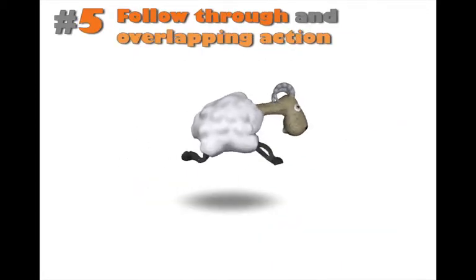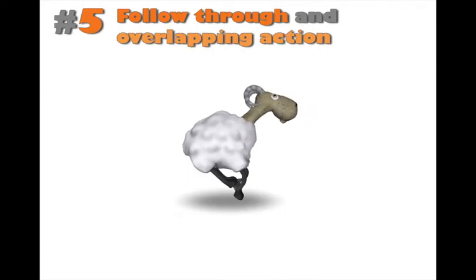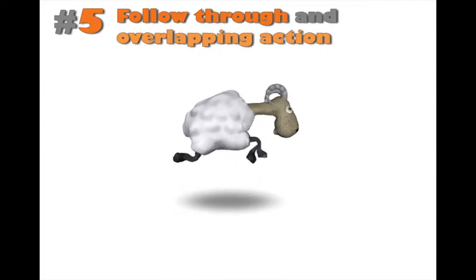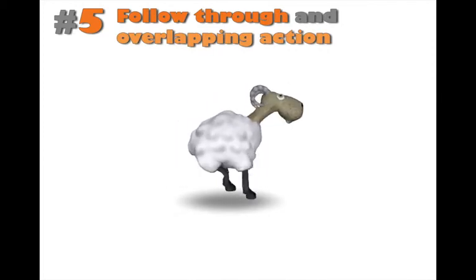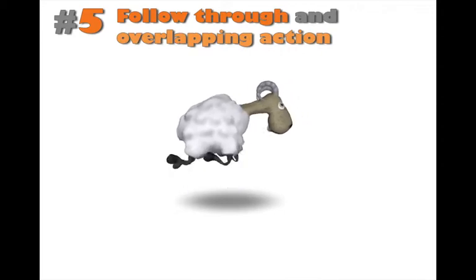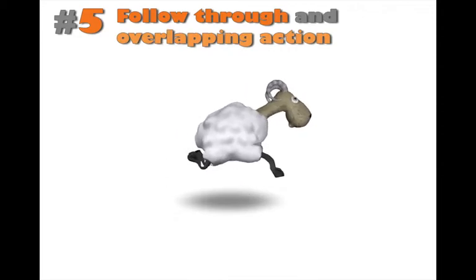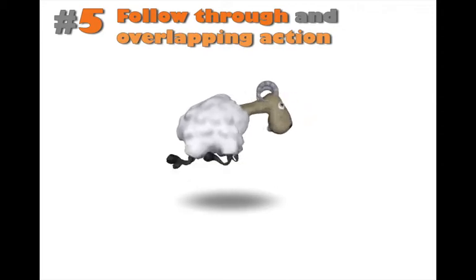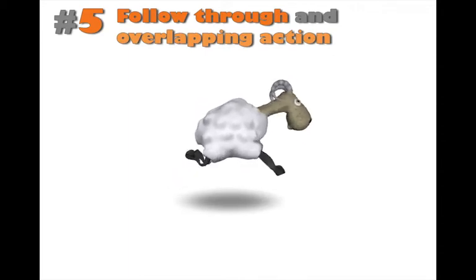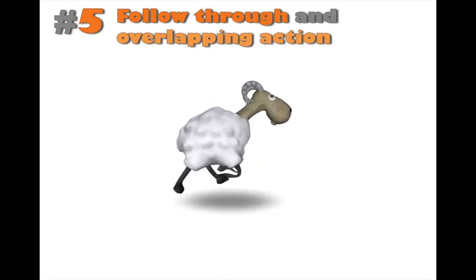Follow-through and overlapping action is the principle of having more than one motion or timing in the same subject. In the sheep example, you've got the body moving up and down in a circle, legs running at double time, and the head nodding up and down — that's follow-through action. The head movement is one unbroken loop going up, through, down, through — it's not stopping at specific keys and it's not rigid. That is the principle of overlapping action — it makes for realism.